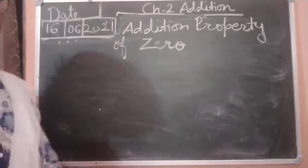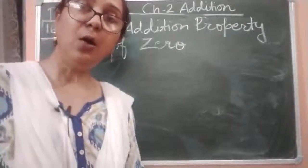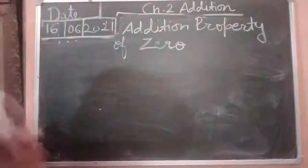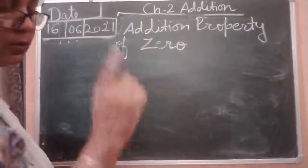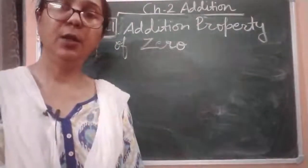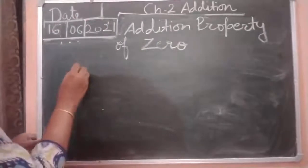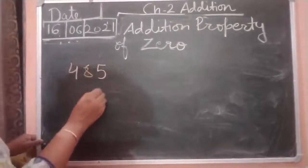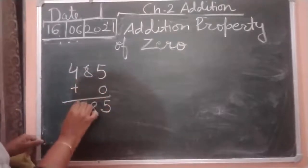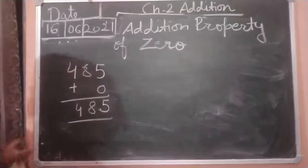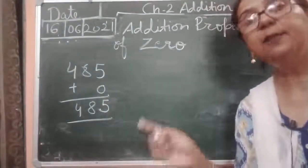When zero is added to a number, or a number is added to zero, we get the sum as the number itself. For example, 485 plus zero: five will remain five, eight will be eight, and four will be four. So 485 plus zero equals 485. After adding zero with any number, the sum will remain the same — the number itself.